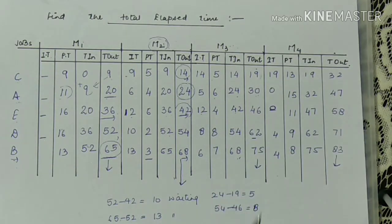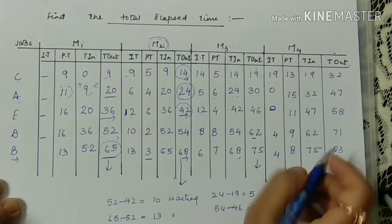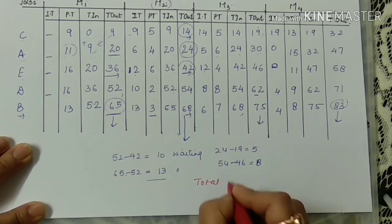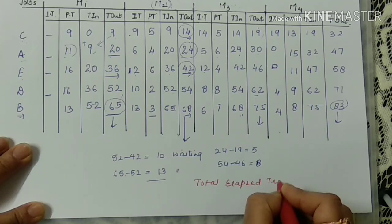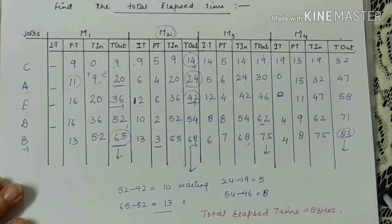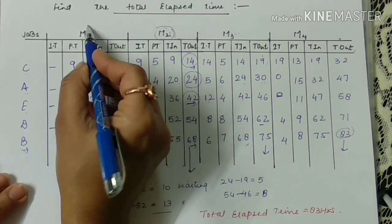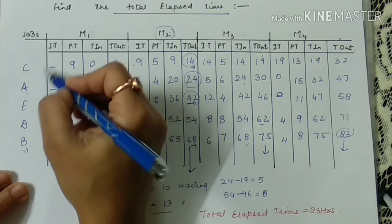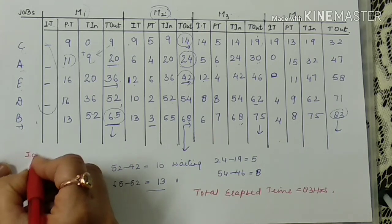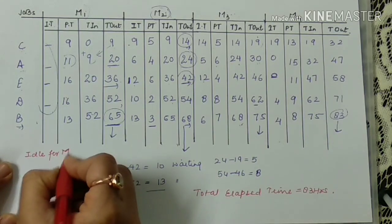After completing the M3 column, similarly M4 is completed. The total elapsed time is 83 hours — M4 machine becomes free at hour 83. So the total elapsed time for this sequencing problem is 83 hours.